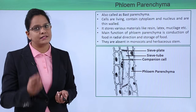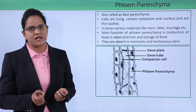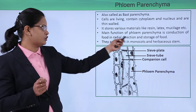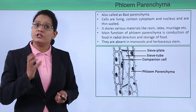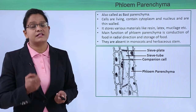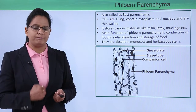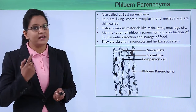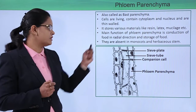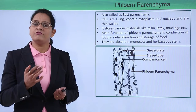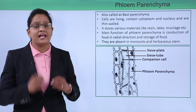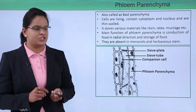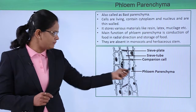Phloem parenchyma, also known as bast parenchyma, consists of living cells containing cytoplasm, nucleus, and protoplasm. Their function, apart from food storage, is radial conduction of water. They also store materials like resin, mucilage, and latex. Phloem fibers are the only dead cells in phloem. Phloem parenchyma is generally formed during secondary growth, which is why it is absent in monocots and herbaceous stems.